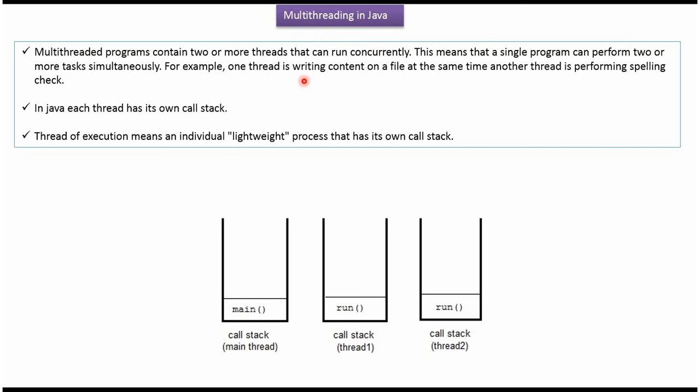Multi-threaded programs contain two or more threads that can run concurrently. This means a single program can perform two or more tasks simultaneously. For example, one thread is writing content to a file at the same time another thread is performing a spelling check.